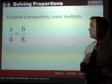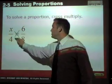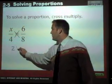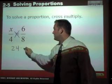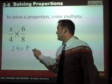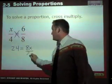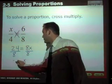In order to solve proportions, all you have to do is cross multiply. So in this particular proportion right here, four times six is 24, x times eight is 8x. And now you just simply divide by eight, and you get x equals three.